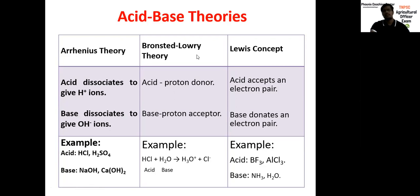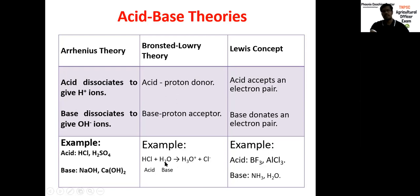Bronsted-Lowry theory: a Bronsted acid is a proton donor and a Bronsted base is a proton acceptor. For example, HCl is an acid and H2O is a base. HCl contains H+ ions; it will donate a proton to water. Water accepts the proton to form H3O+.